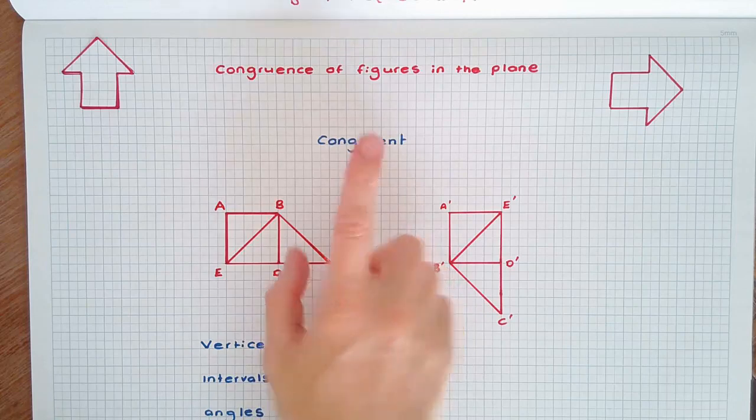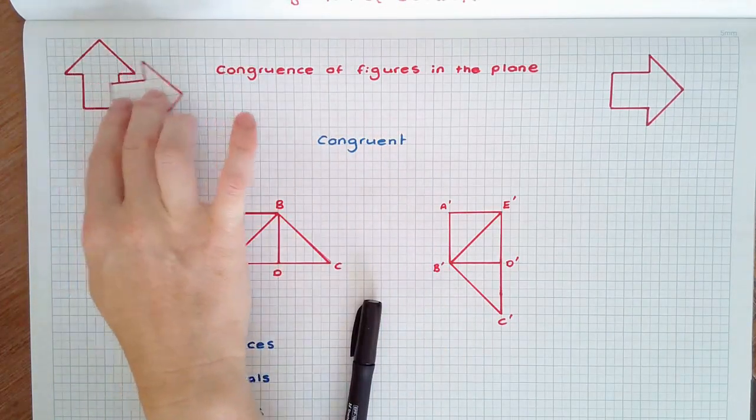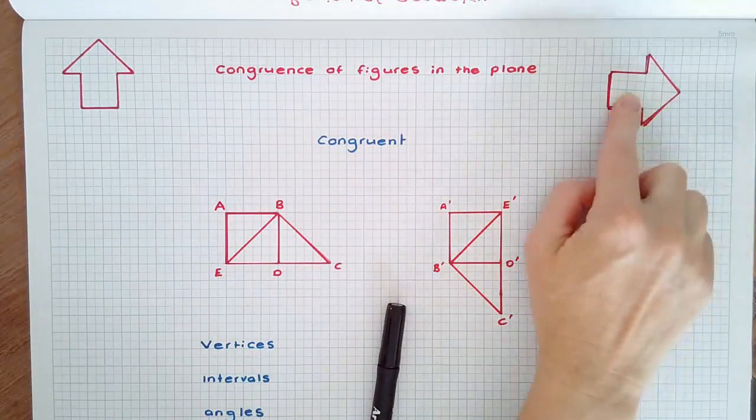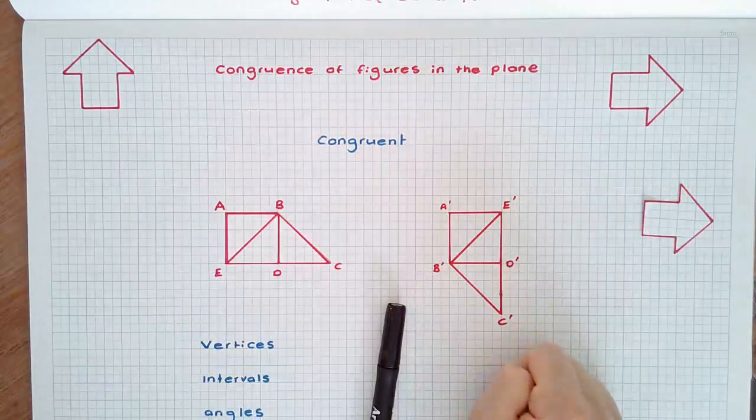For example, this figure on the left can be rotated and translated to coincide with that on the right. So these two figures are called congruent.